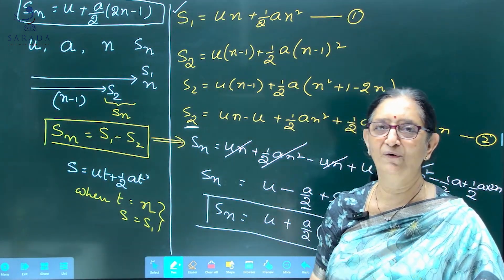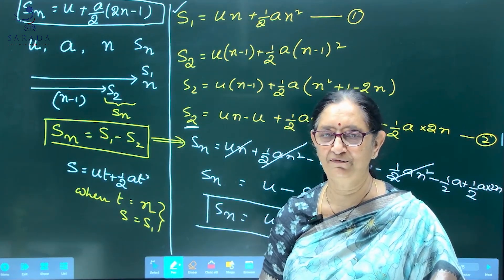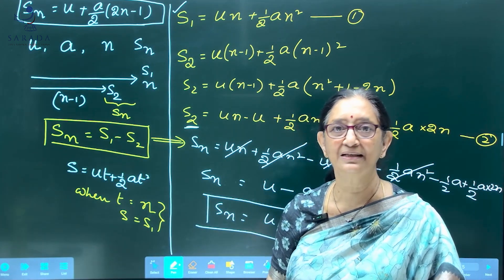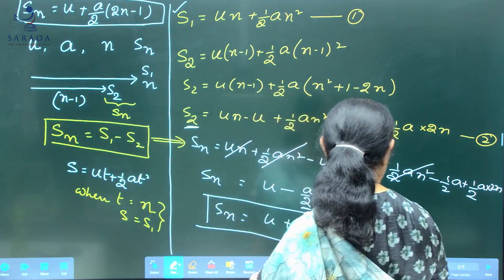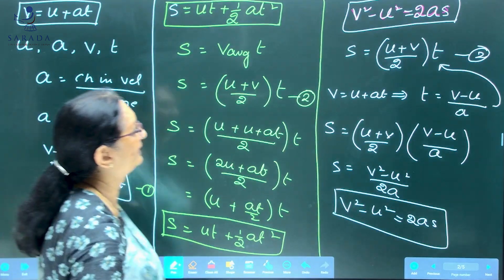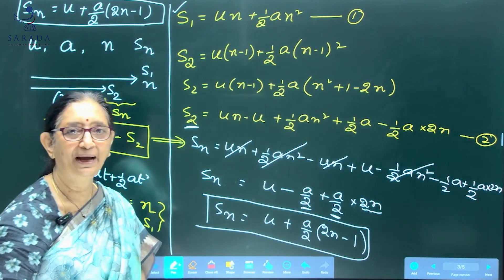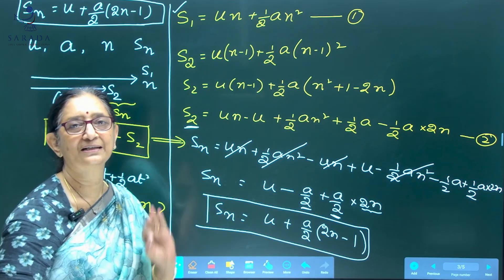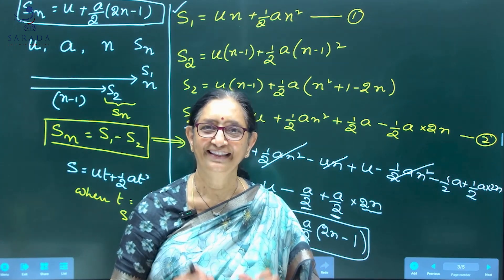So we have learned all 4 derivations, which are important from the public examination and board exam point of view. For objective examinations you have to remember all 4 equations: V = U + AT; S = UT + ½AT²; V² − U² = 2AS; and SN = U + (A/2)(2N − 1). Those 4 equations you must understand to solve problems. I will stop here for today. Thank you and bye-bye.